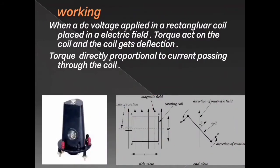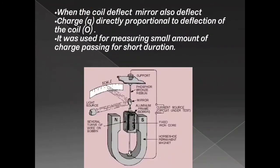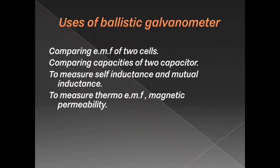Working: when a DC voltage is applied to a rectangular coil placed in a magnetic field, a torque acts on the coil and produces deflection. The torque is directly proportional to the current passing through the coil. When the coil deflects, the mirror also gets deflected, because the coil and mirror are attached to the phosphorus bronze wire. The charge is directly proportional to the deflection of the coil. The ballistic galvanometer is used for measuring small amounts of current passing in a short duration, comparing EMF of two cells, comparing capacitance of two capacitors, and measuring self-inductance, thermal EMF, magnetic permeability, and high resistance.